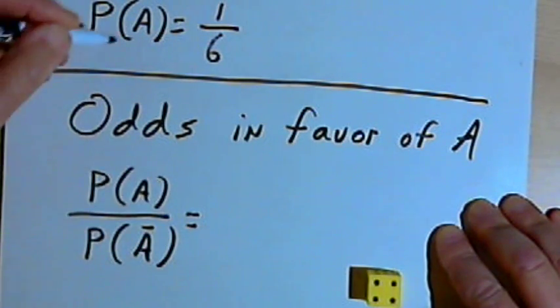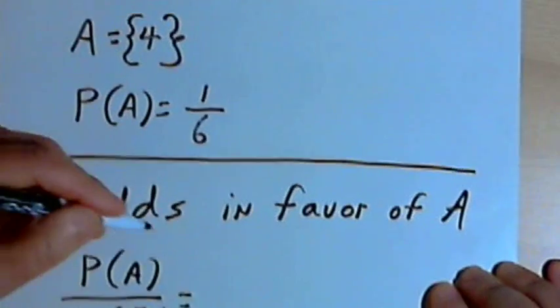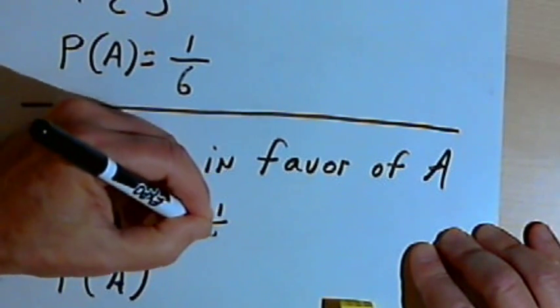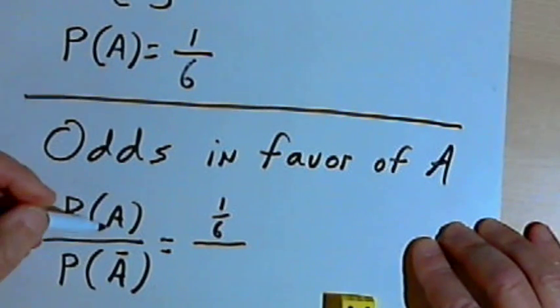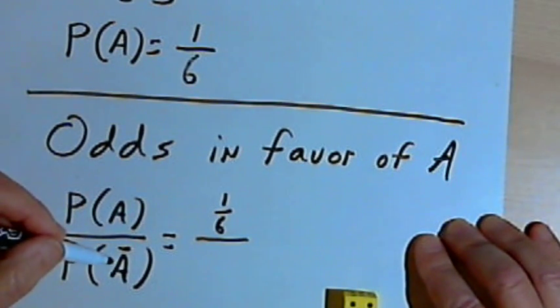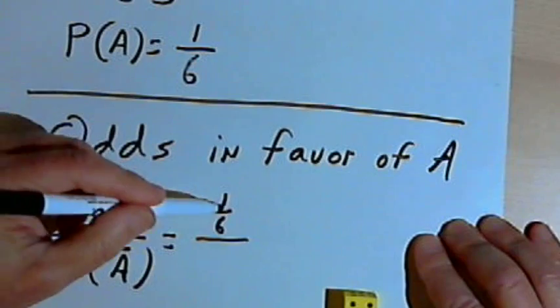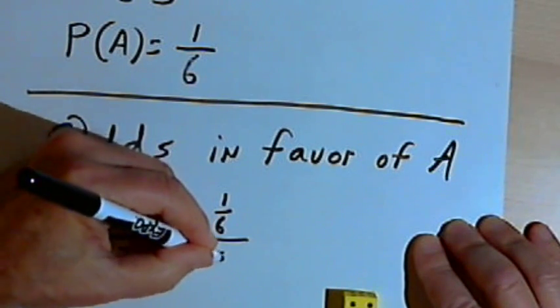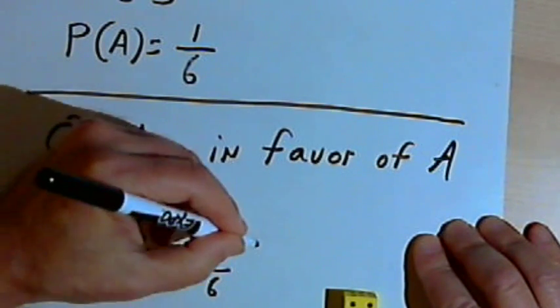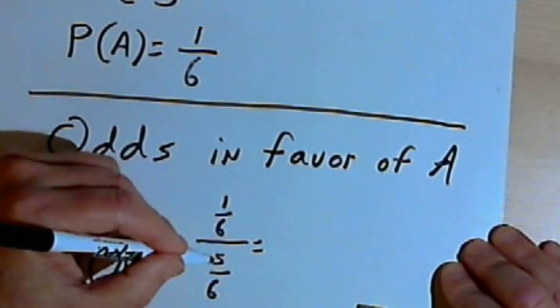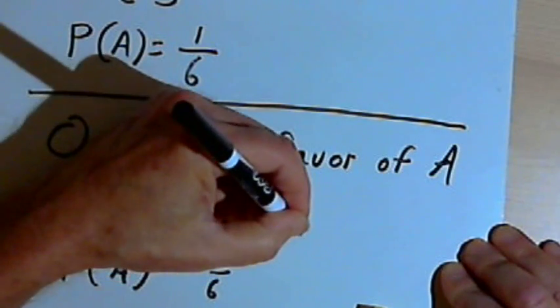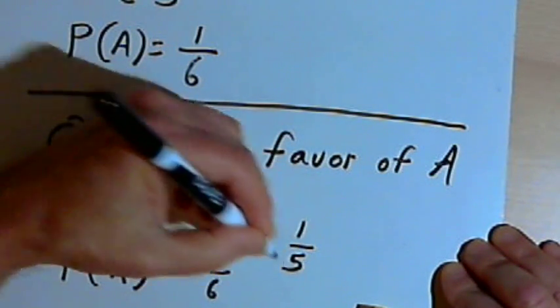So the probability of A was 1 over 6. And the probability of A not happening, the probability of the complement of A, would be 1 minus 1 over 6, which is 5 over 6. And if I take the fraction that I have and reduce it, if I take 1 over 6 divided by 5 over 6 and reduce that, I get 1 over 5.